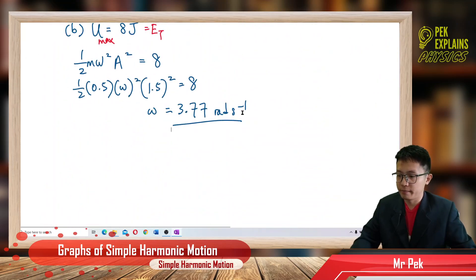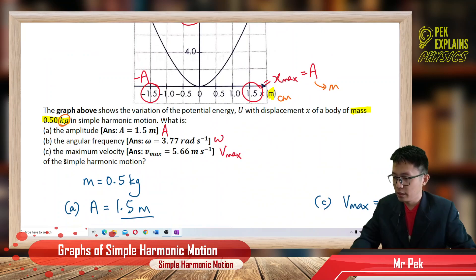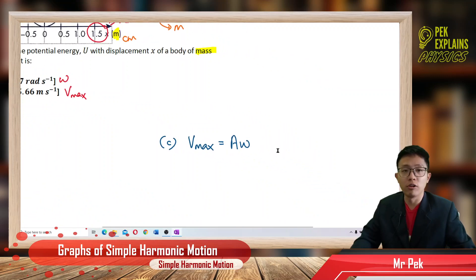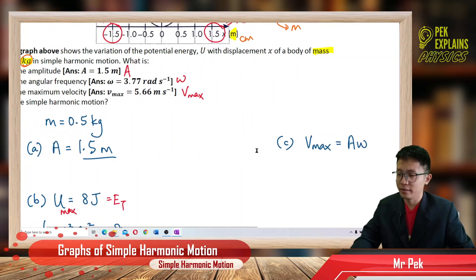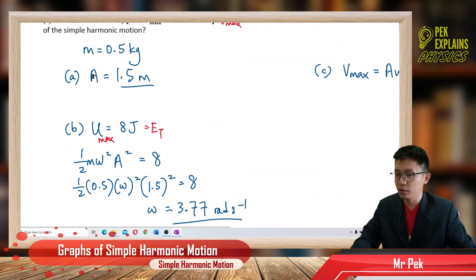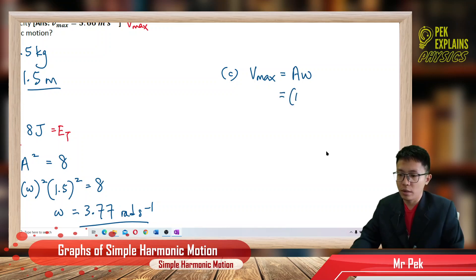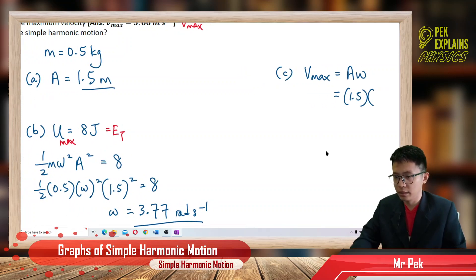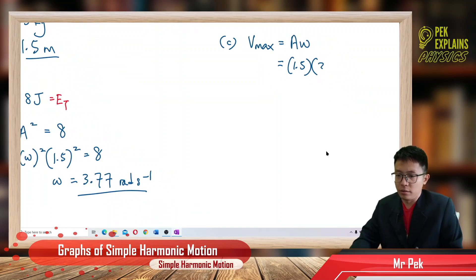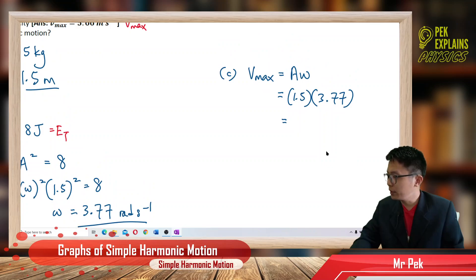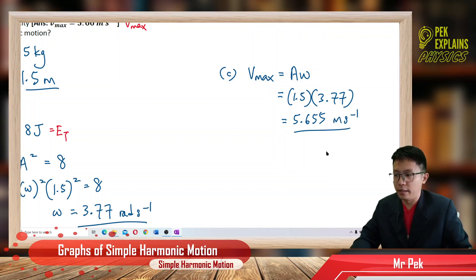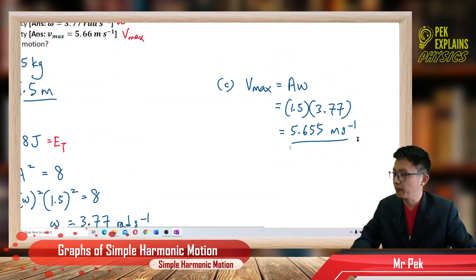Now for the final question — maximum velocity. The formula for maximum velocity is V_max = A times omega. We have amplitude = 1.5 meters and omega = 3.77 radians per second, both already in SI units. Multiplying gives 5.655 meters per second.